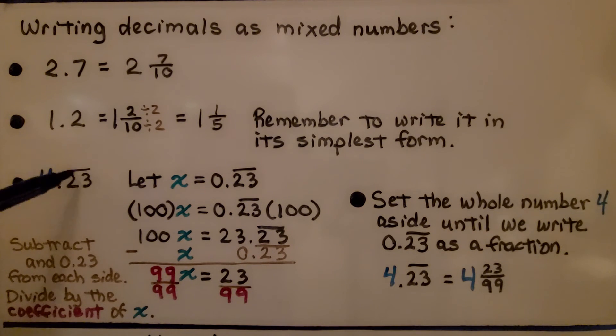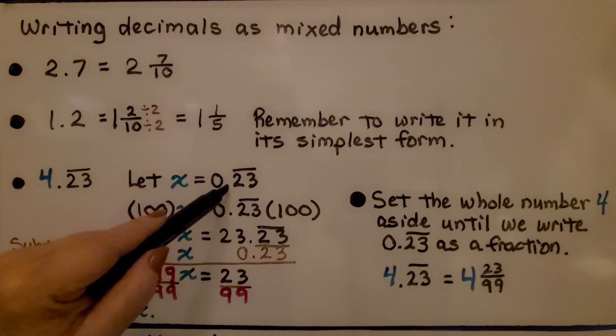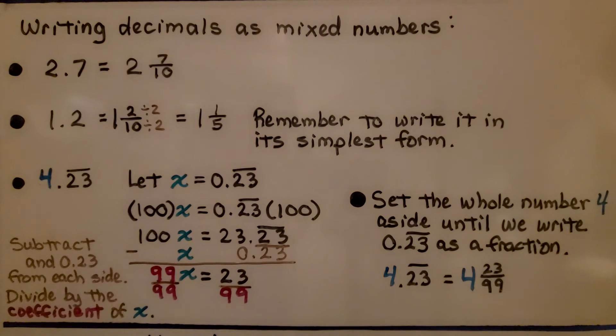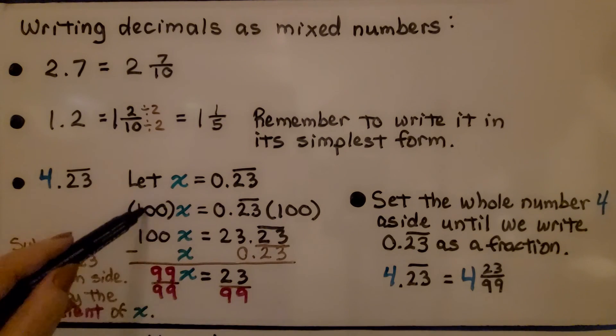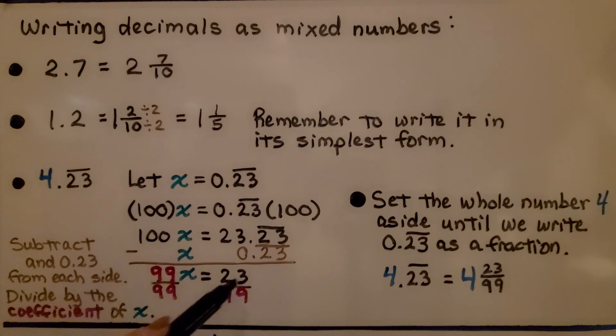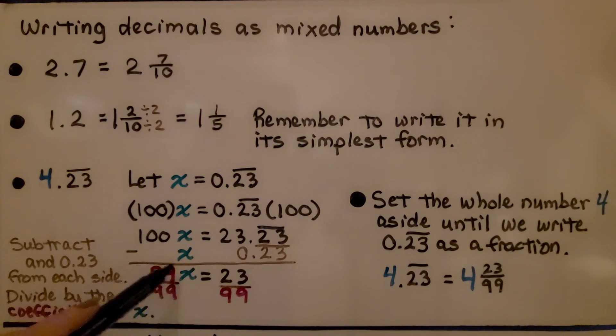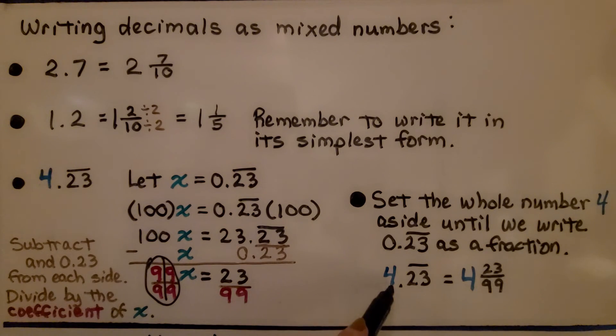Here we have 4 and 23 hundredths where the 2 and the 3 are repeating. Again, we let x equal 0.23 with the bar over the top. And we just set the whole number 4 aside until we write the 0.23 as a fraction. And we multiply each side by 100. Then we subtract x and the 0.23 from both sides and get our 99x is equal to 23. We divide both sides by the coefficient 99. And this makes a 1, same numerator and denominator. We have x is equal to 23 99ths. Now, we just put the 4 back on that we had set aside. We know that it's equal to 4 and 23 99ths.